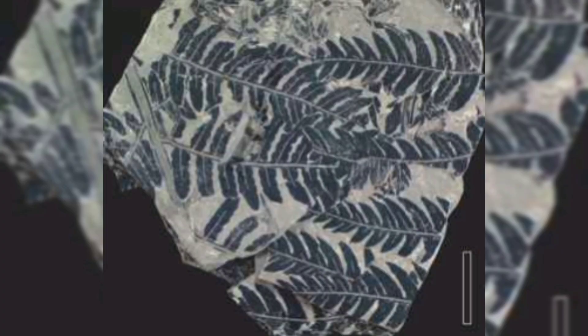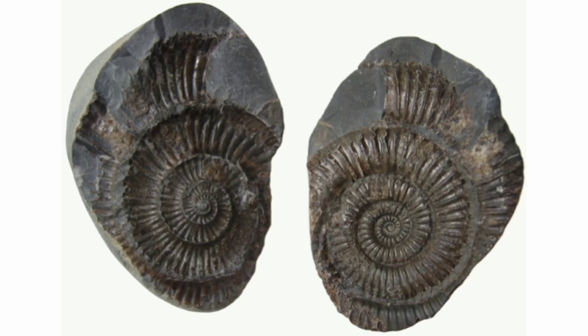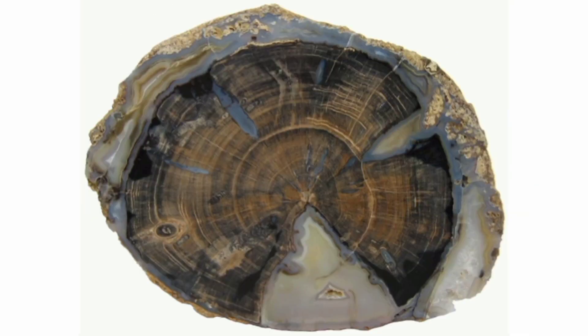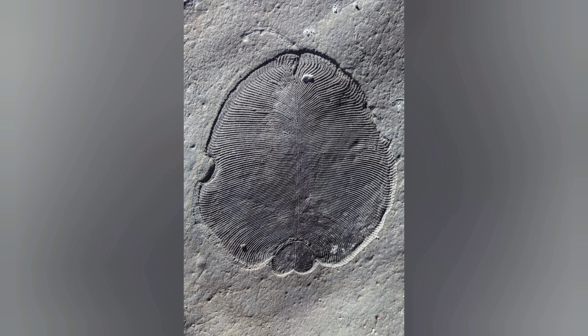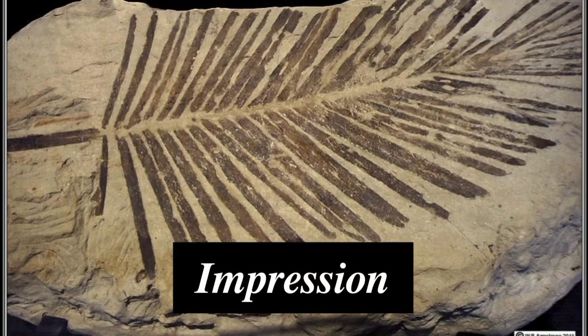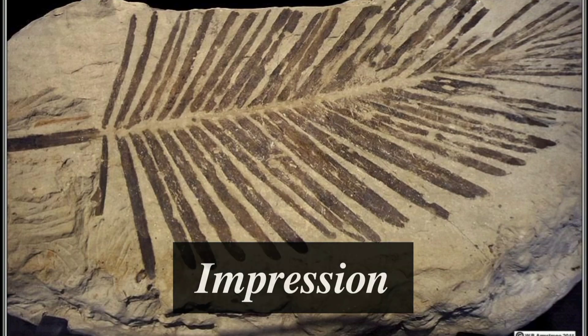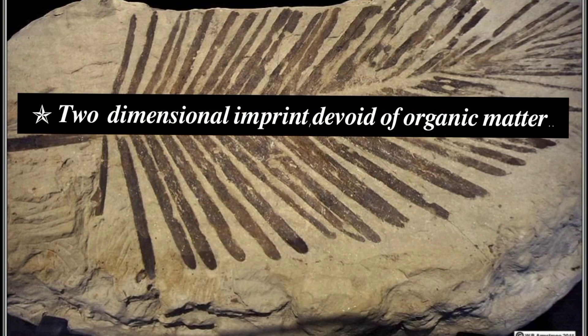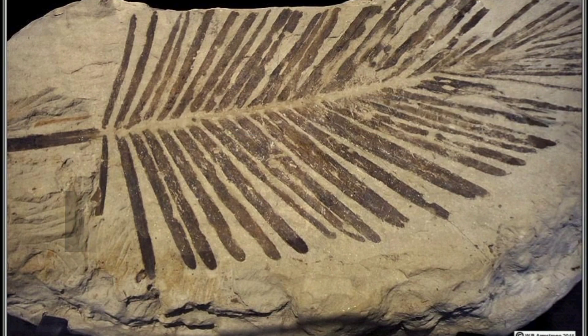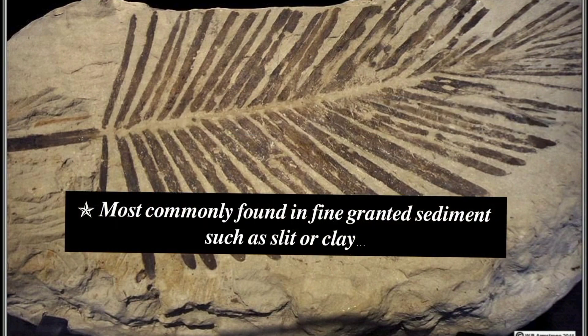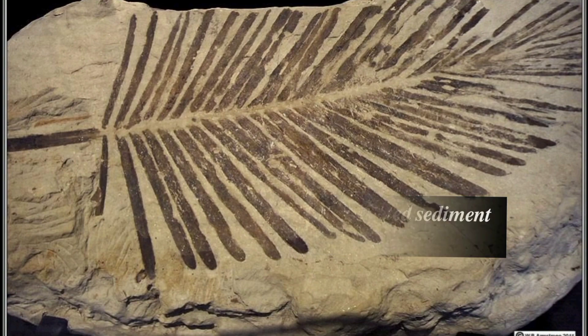Types of Fossilization: Impression, Compression, Cast and Moulds, Permineralization, and Molecular Fossils. Impression is a two-dimensional imprint devoid of organic matter, most commonly found in fine-grained sediment such as silt or clay.